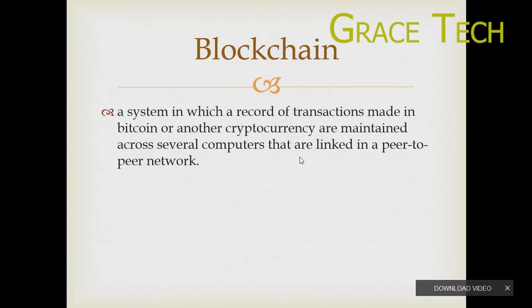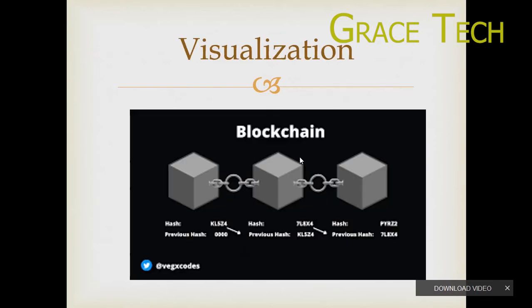Blockchain is a chain of blocks, and blockchain is a transaction. This transaction is decentralized. It is media data, peer-to-peer. It is a chain of data, a chain of personal data.